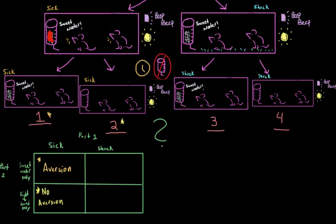And let's actually start talking about group four over here. So these are the rats who were given tap water in the second part and also heard the beeping and saw the lights. So now our question is, will these rats refuse to drink the tap water in the presence of the light and the sound? And it turns out that the answer is yes. They do develop an aversion. They do not drink the water.